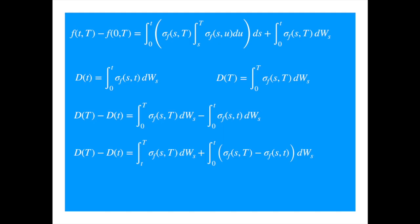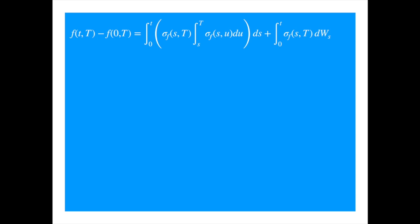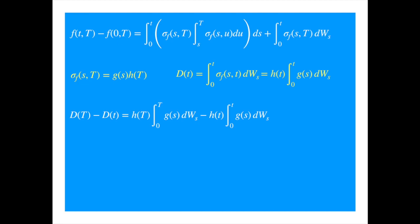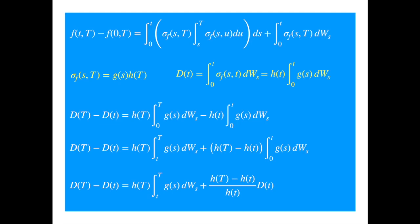If we assume that the volatility is separable — that we can write it as a product of a function of time and a function of maturity — then we can show the process is Markov. Substituting into the stochastic term and the increments, we can take the maturity-dependent factor h out of the integral since it doesn't depend on the integrating variable. The expected value of the first term is zero. For the second term, dividing and multiplying by h gives dt, so the expected value of the increment from small t to capital T only requires the value of the process at small t, which means this is now a Markov process.